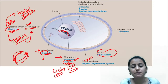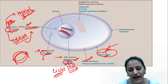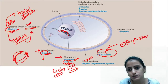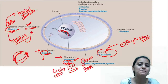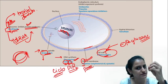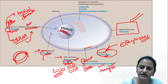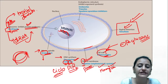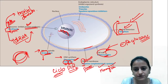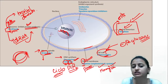Cell wall and plasma membrane: echinocandins act on the cell wall by inhibiting beta-glucan synthesis. Polyenes — amphotericin B, nystatin, and natamycin — form pores in the plasma membrane, not in the cell wall. Tolnaftate is the antifungal drug that acts by causing hyphal distortion — it breaks and distorts the hyphae.